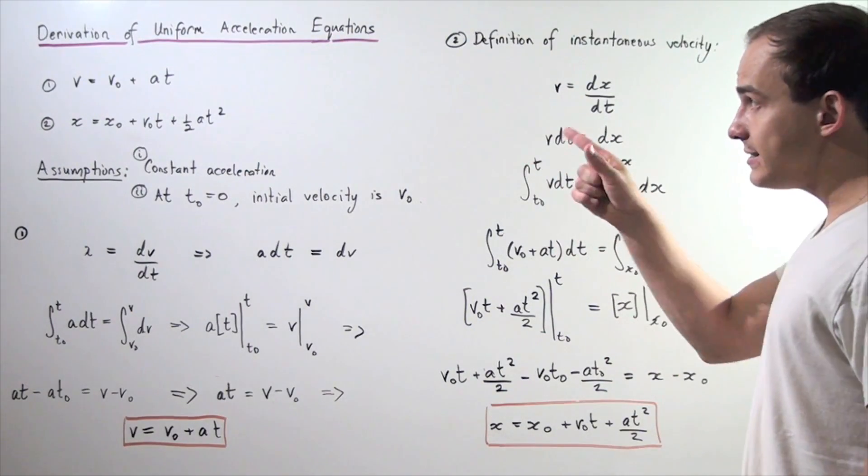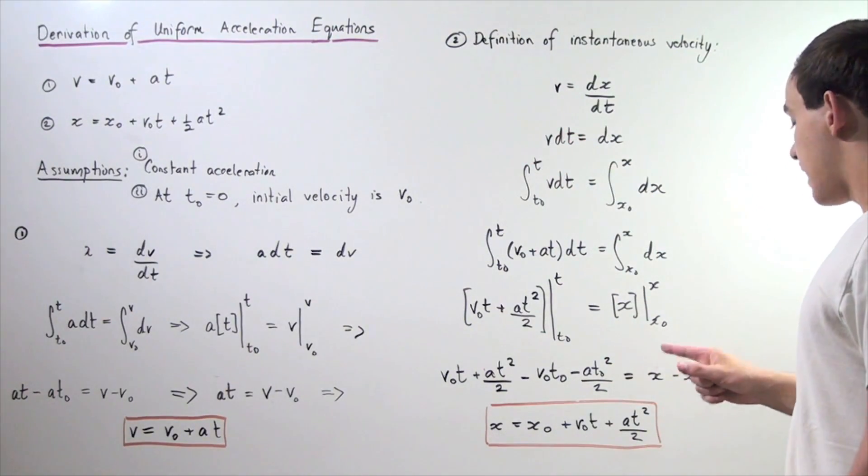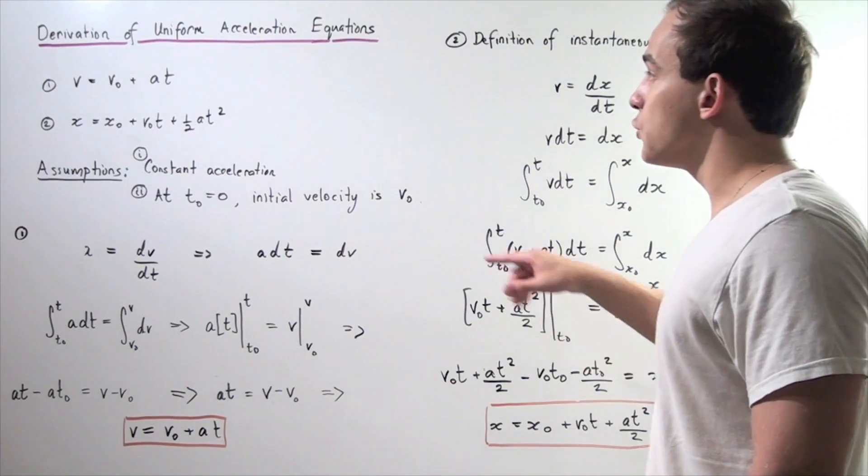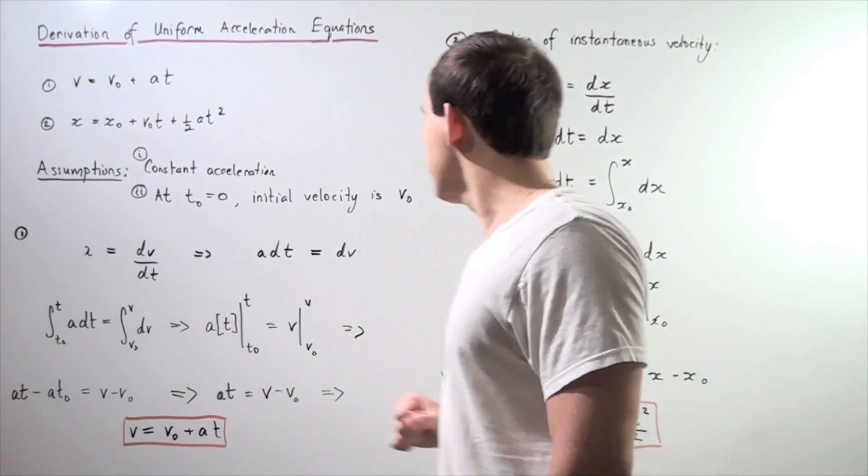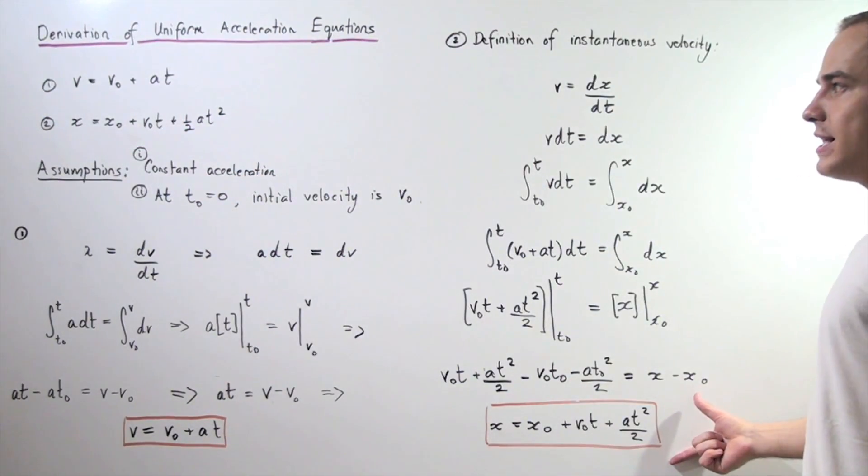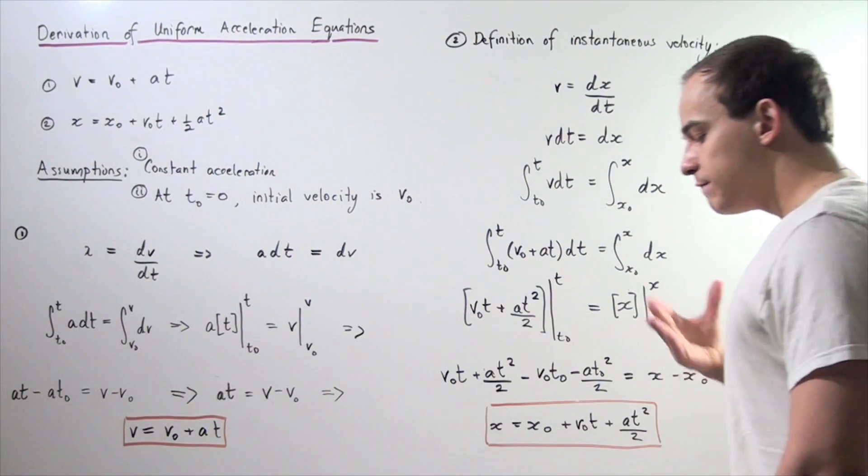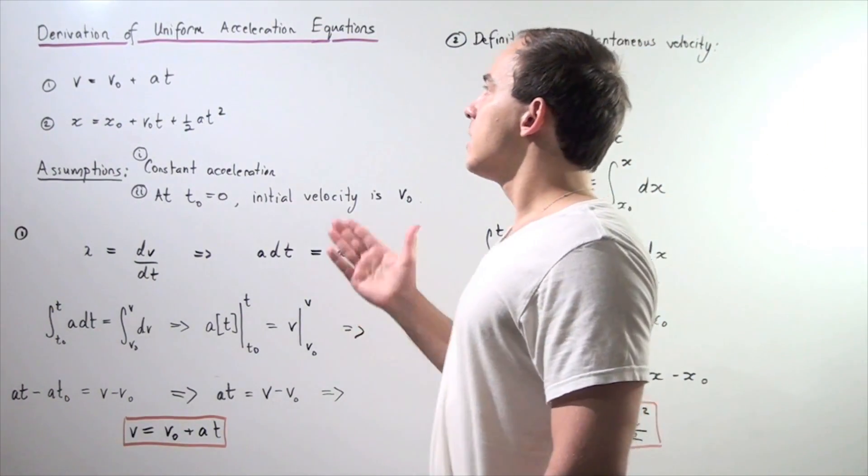initial times t plus a times t squared divided by 2. So this is exactly equivalent to this formula here and this gives us the final position of our object moving under constant or uniform acceleration.